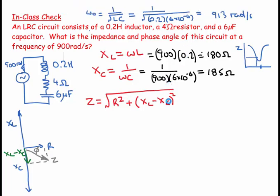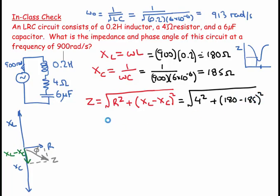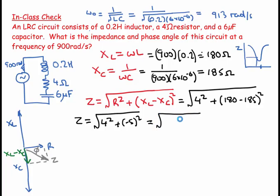Substituting the numbers: Z equals the square root of 4 squared plus (180 minus 185) squared, which is the square root of 16 plus 25, which equals the square root of 41, giving Z equals 6.4 ohms.